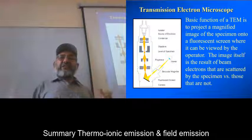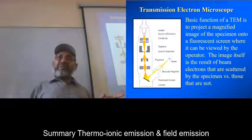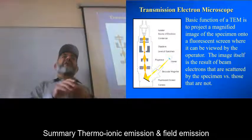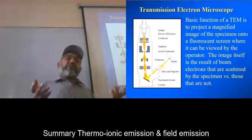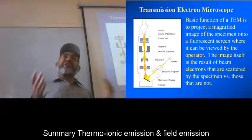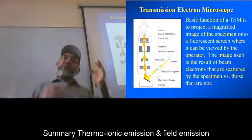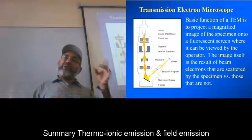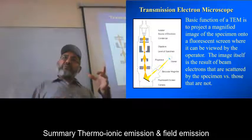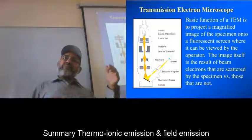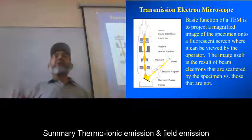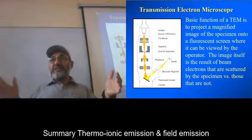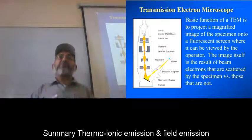Since in the thermo-ionic emission the electrons are violently emitted by the filament, it is relatively difficult to form a very nano-size beam from those electrons because their original kinetic energy is there. And you will have to control all those things in order to gather them into a beam.